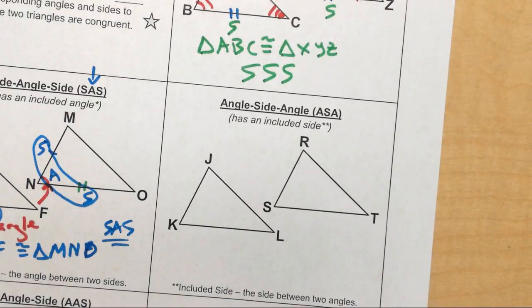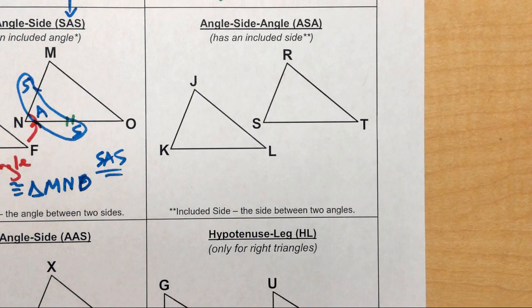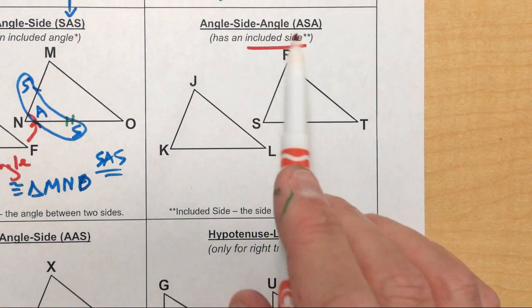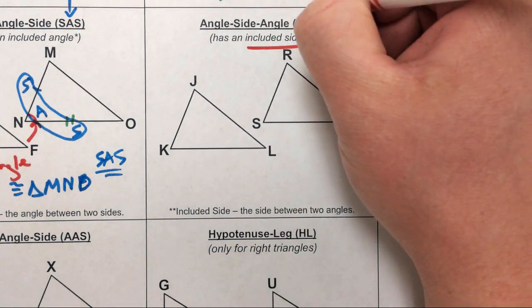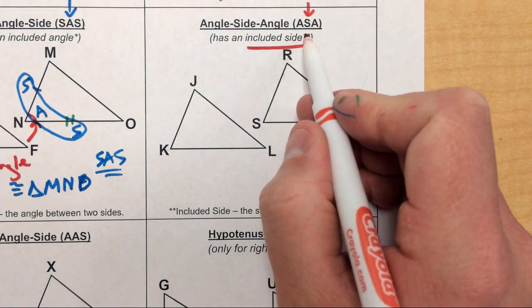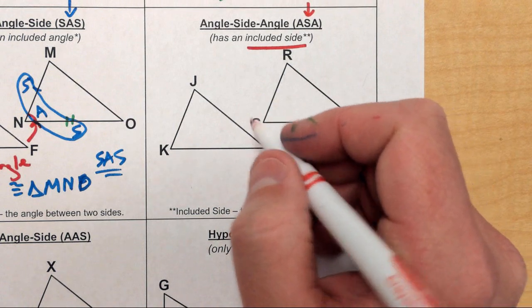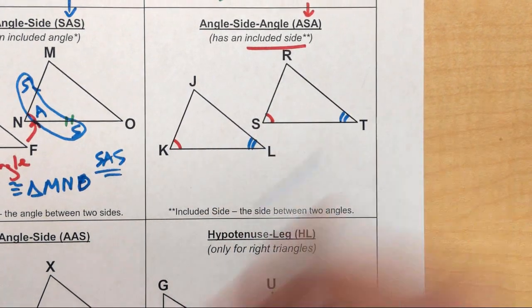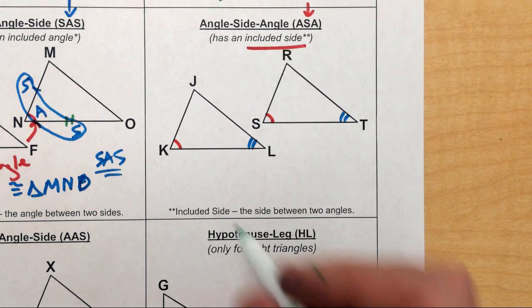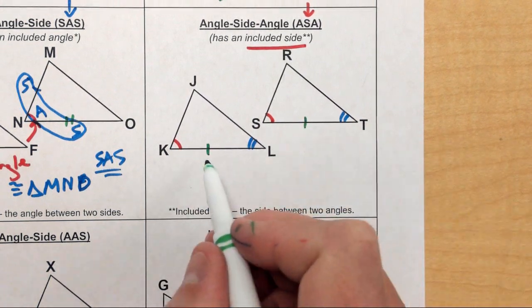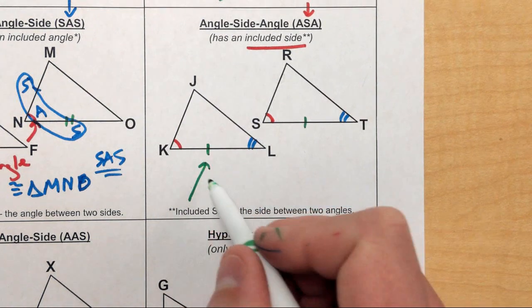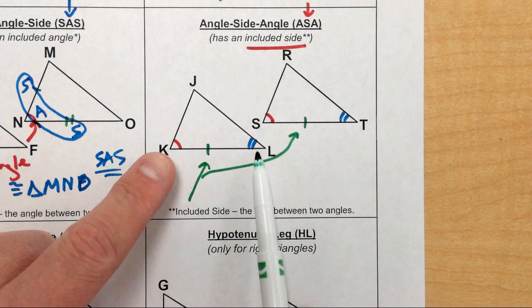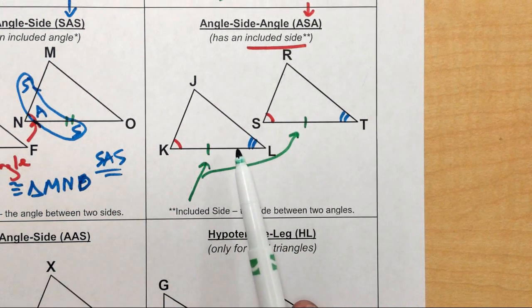The next one is the Angle-Side-Angle postulate. It has something similar to the last one but a little different — we're now going to focus on what we call an included side. Included side is similar to included angle except we're kind of doing everything in reverse. Notice how the side here is between the two angles — that's the idea behind an included side. Let's say I mark angle K congruent to S, and also angle L congruent to angle T. The side directly between those two sets of congruent angles would be side KL and over here side ST — these are the included sides.